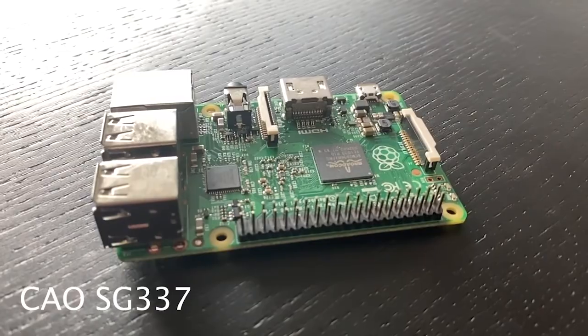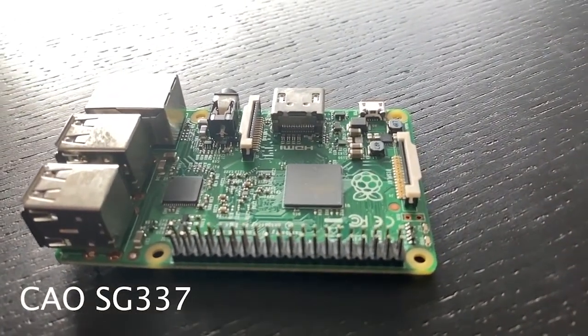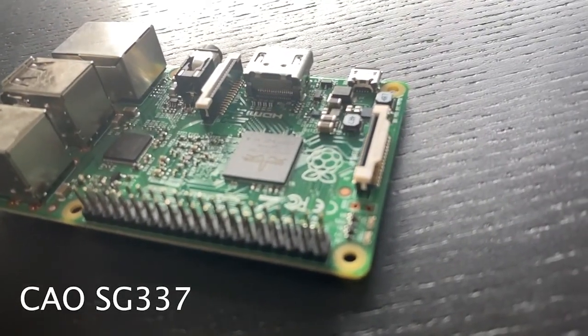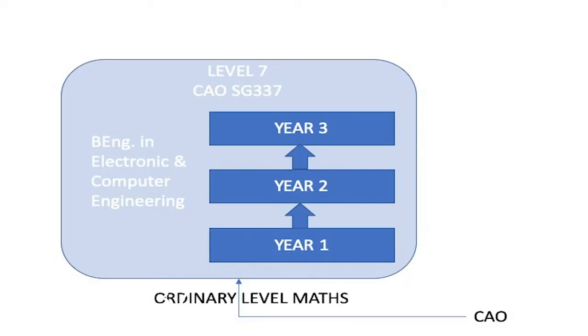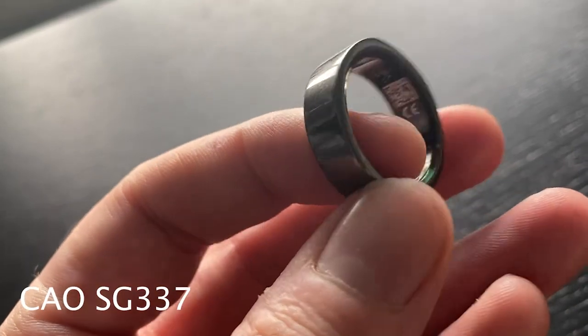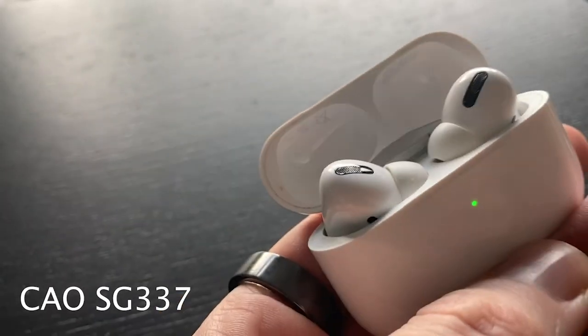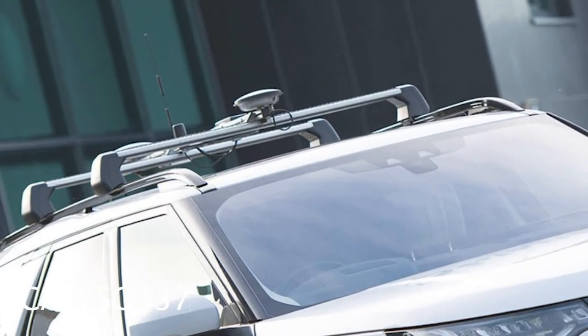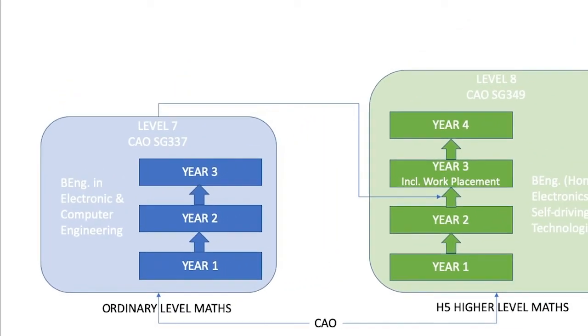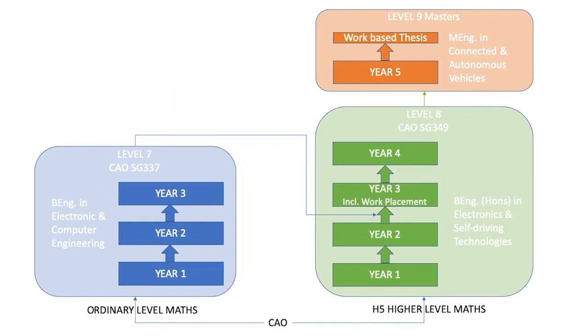If you are interested in technology or engineering, but are not doing higher level maths, why not consider our level seven in electronic and computer engineering? This is a three-year program that looks at the design and development of embedded electronic systems. These are the medical devices that keeps us healthy, the consumer devices that keeps us entertained, or the controlled systems that keeps us safe on the road. You can then progress onto the level eight in electronics and self-driving technologies, and from there to the masters. Check out the link below for more information.